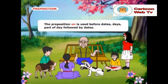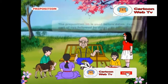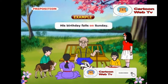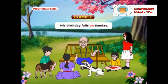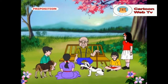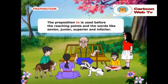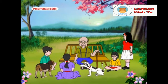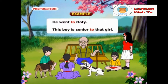The preposition on is used before dates, days and parts of a day followed by dates. Example: His birthday falls on Sunday. The preposition to is used before reaching points and words like senior, junior, superior and inferior. Examples: He went to Ooty. This boy is senior to that girl.